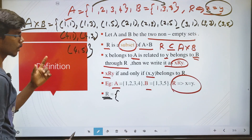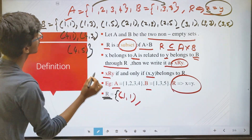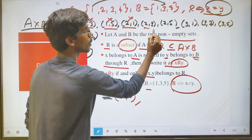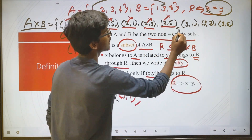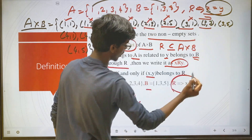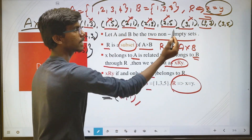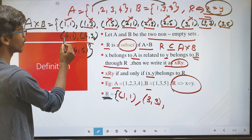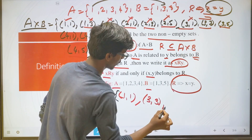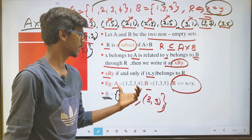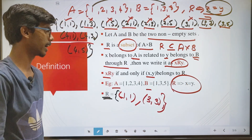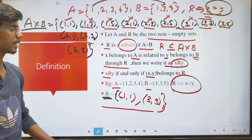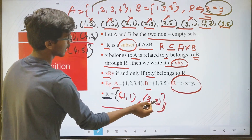Now we check which pairs satisfy the condition x equal to y. Checking: (1,1) — 1 equals 1, yes. (1,3) — not equal. (1,5) — not equal. (2,1) — not equal. (2,3) — not equal. (2,5) — not equal. (3,1) — not equal. (3,3) — first coordinate 3, second coordinate 3, x equal to y, so (3,3) satisfies. (4,1), (4,3), (4,5), and (3,5) — remaining elements are not equal. So the relation set has condition x equal to y satisfied by (1,1) and (3,3). That is the relation set.